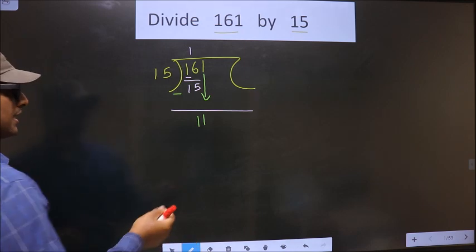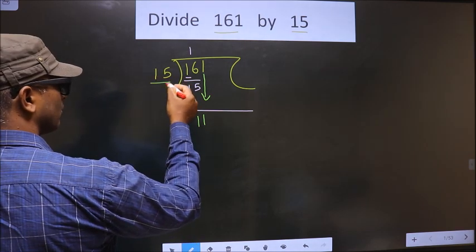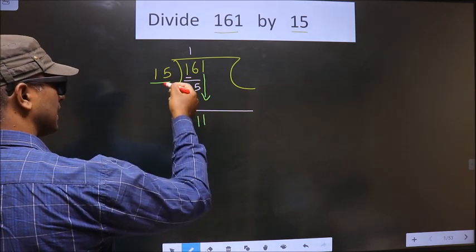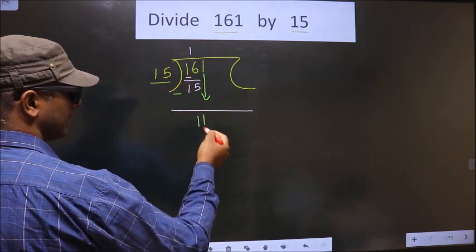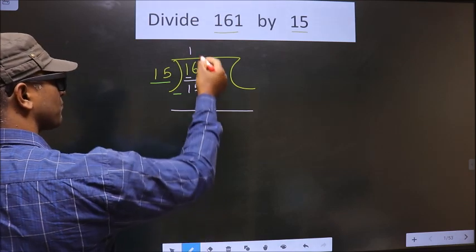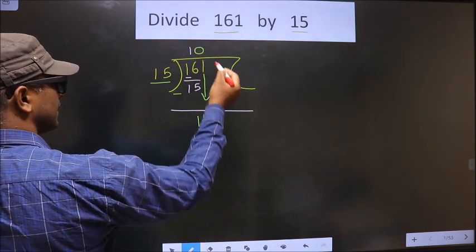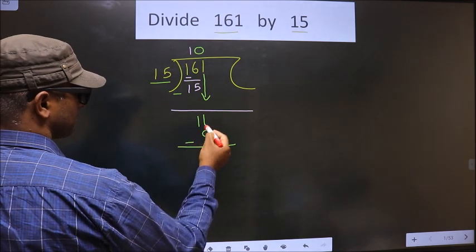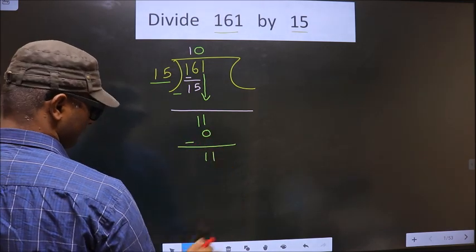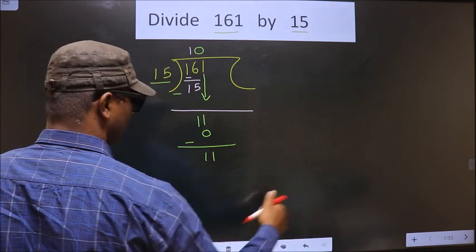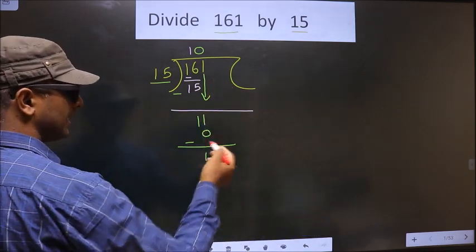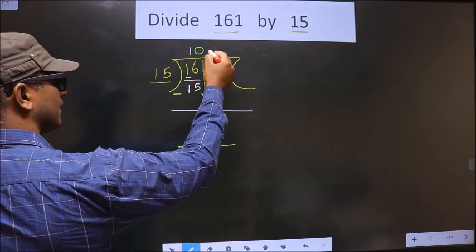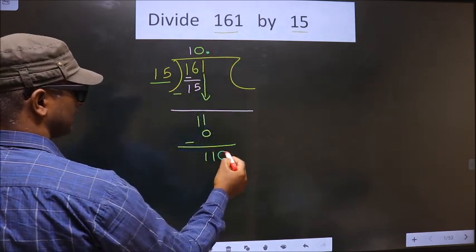So now you should think, to this number what should we multiply to get a number here? So if we multiply with 1, we get 15. That is more than this. So we should multiply by 0. So 15 into 0 is 0. So now you subtract, you get 11. Over here we did not bring any number down. Now, 11 is smaller than 15. Now you take the decimal and 0 here.